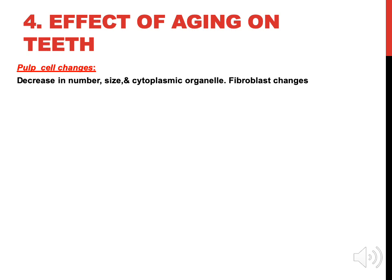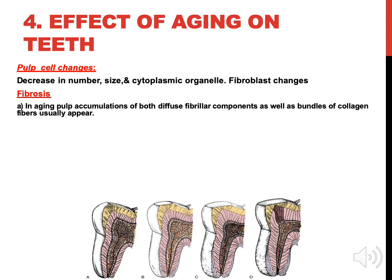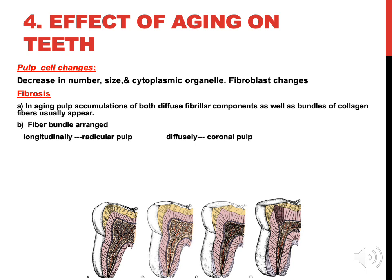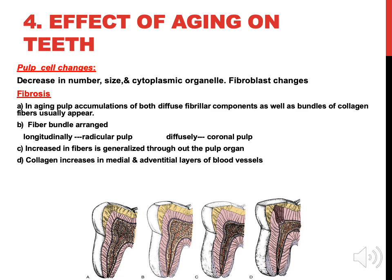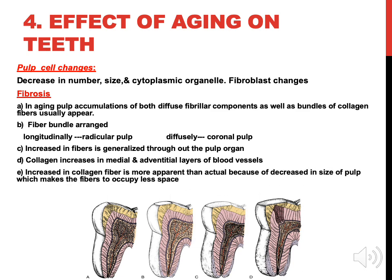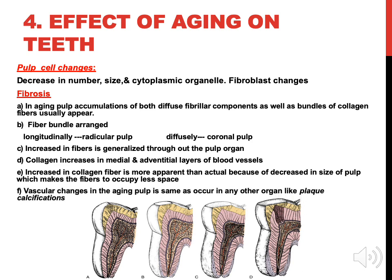Pulp cell changes: there is a decrease in number, size, and cytoplasmic organelles of fibroblasts. Fibrosis occurs in the aging pulp, with accumulation of both diffuse fibrillar components and bundles of collagen fibers. Fiber bundles are arranged longitudinally at the radicular pulp and diffusely at the coronal pulp. Increase in fibers is generalized throughout the pulp organ. Collagen increases in the medial and adventitial layers of blood vessels. Vascular change in the aging pulp is the same as in any other organ, including plaque calcification.